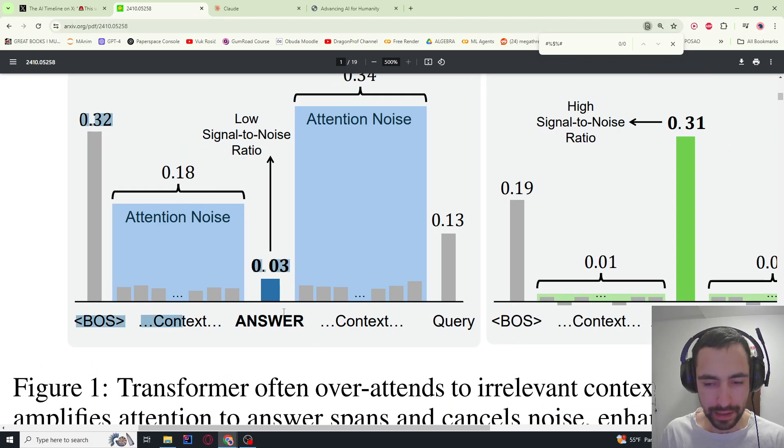They have classic transformer and then their differential transformer. In both cases, they have some long text—hundreds of thousands of tokens, maybe millions. There's a beginning of sequence, a bunch of random text they call context, the answer to their question, then a lot of irrelevant stuff, and then there's a query in the end. So the query is just a question appended at the end, like 'in which year did this and that happen,' and that information is contained in a little sentence in the middle of this irrelevant stuff.